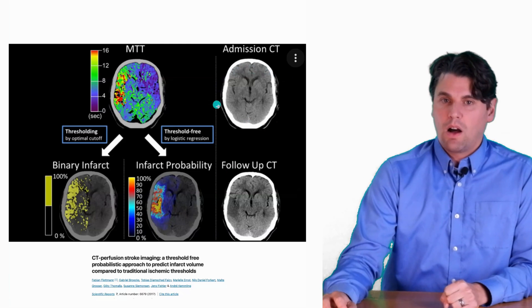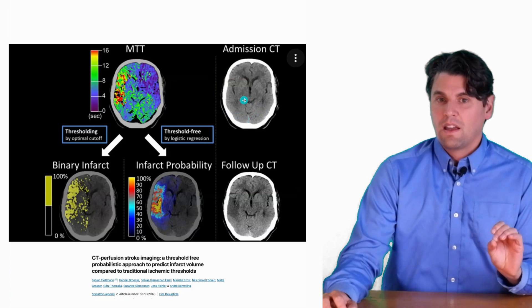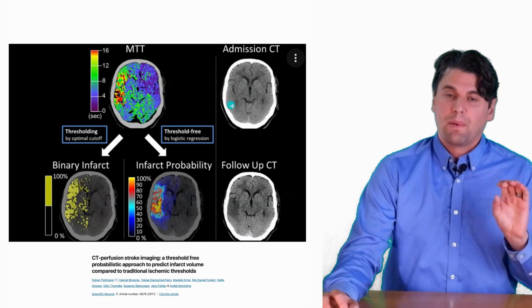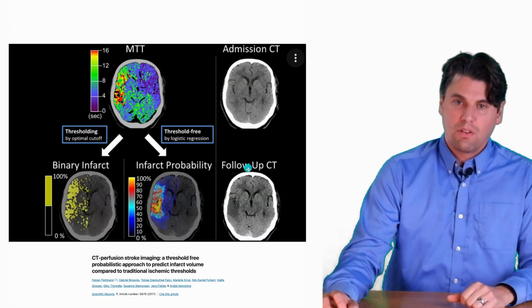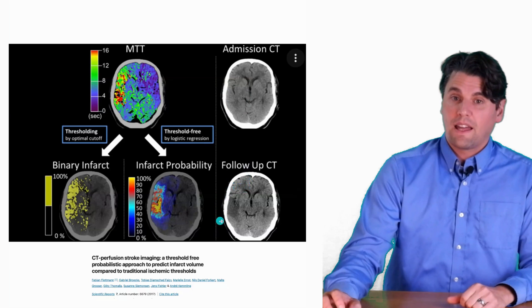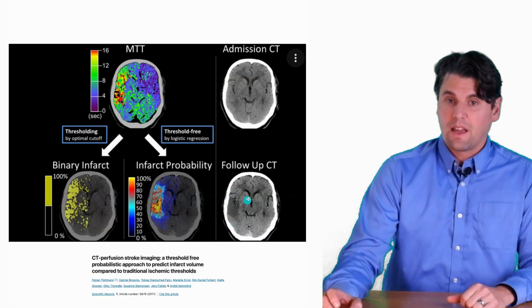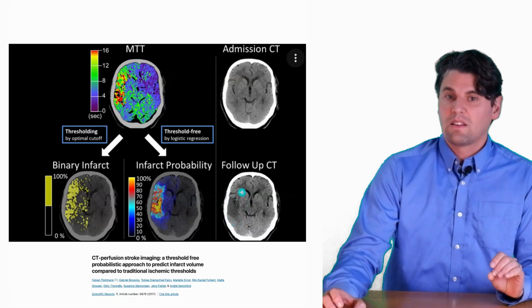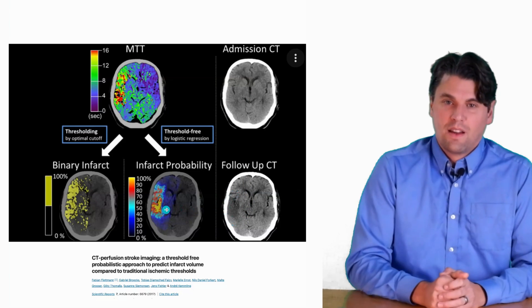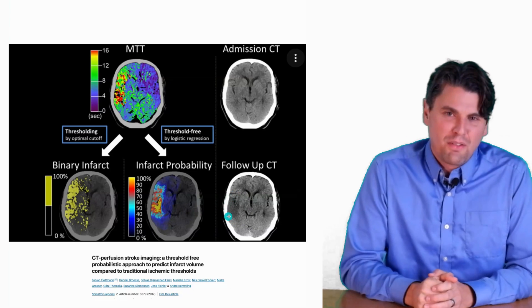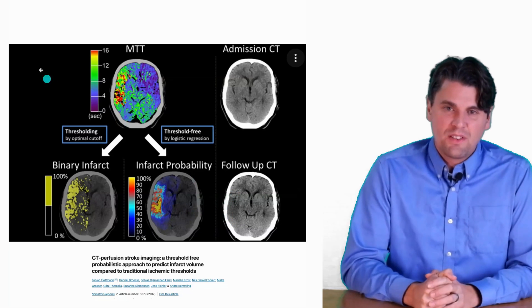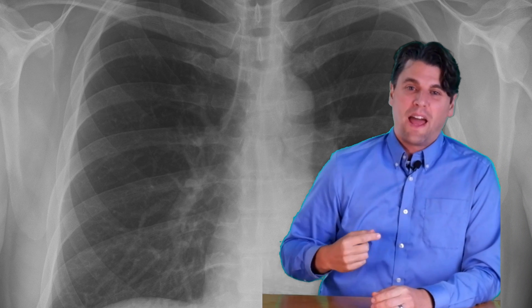If you just look at a CT perfusion map, you can get the sense that there is a region of interest, but if you try to do a simple threshold on this map you may get an exaggeration of a larger region. Whereas if you do a probability function based on regression or fitting, you can get something that says the probability of the infarct is in this specific region. That can actually correlate well to the non-contrast CT at follow-up — this is showing exactly why we need perfusion imaging, because on the non-contrast CT at admission you can't visualize the ischemic region, but at follow-up you can see it correlates well with these probability maps for infarction.